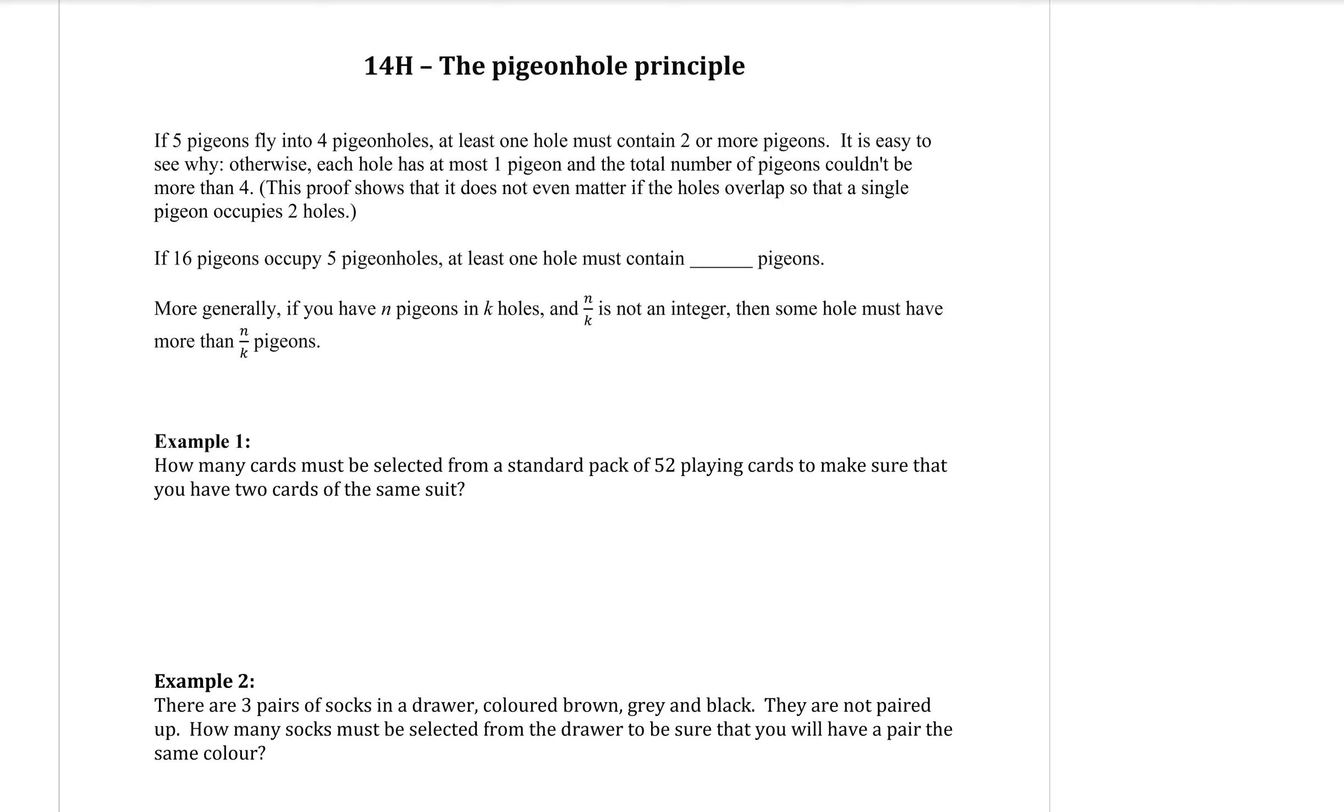Our whole topic so far has been about counting the number of ways of getting things, and we've been using permutations and combinations and factorials. This section, as I explained to you last lesson, is a little bit different. I guess it's included in this topic because we're still trying to count the number of ways of doing things, but it's not by placing things in order or putting groups together.